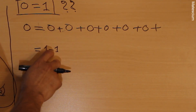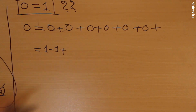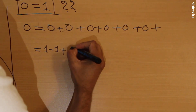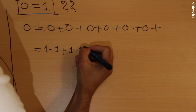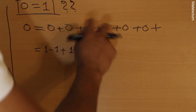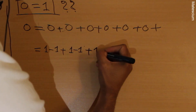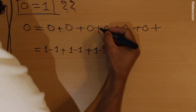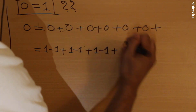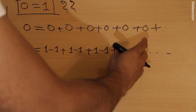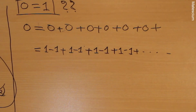So each zero on the right-hand side is replaced by one minus one. We get: one minus one, plus one minus one, plus one minus one, plus dot dot dot. I am not writing all of them — for simplification I am just considering a small part.